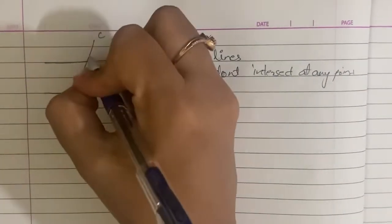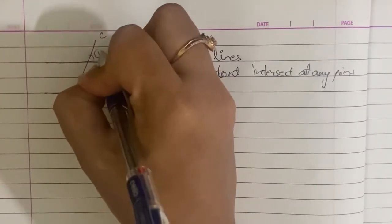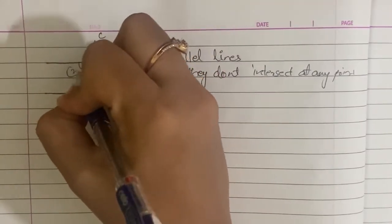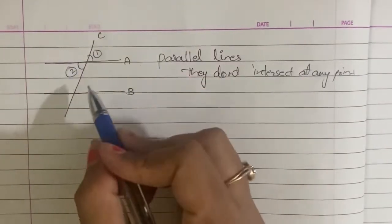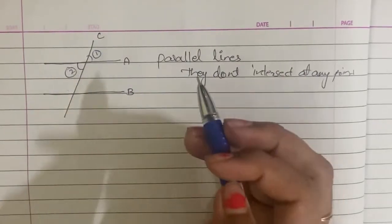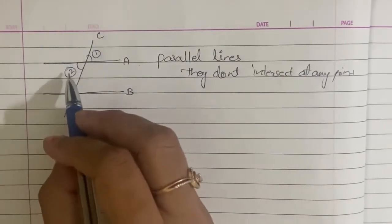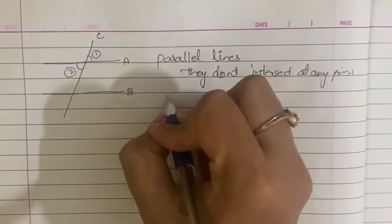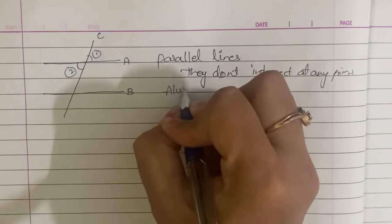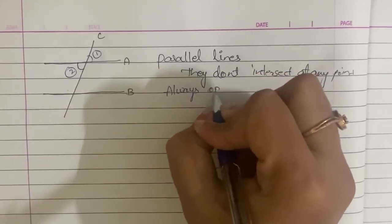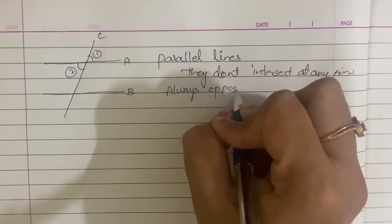Let us say this is the first angle and this is the second angle. With the opposite angles, this is the form. Opposite angles are always equal.